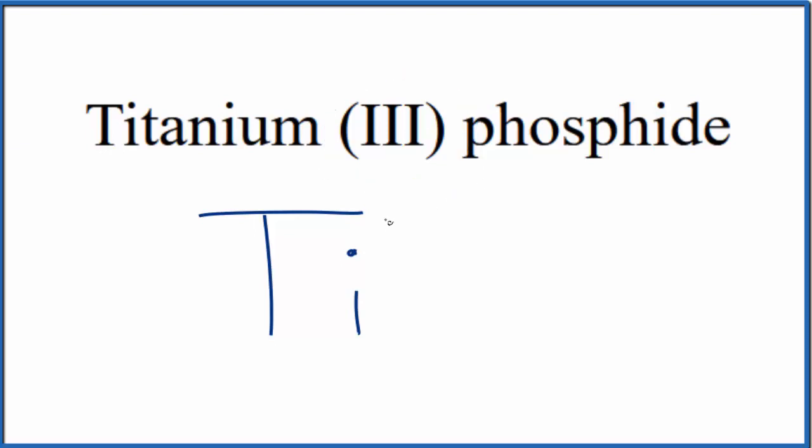And the Roman numeral three here, this means it's 3 plus. Phosphide, that's from phosphorus, so we're just going to write P.